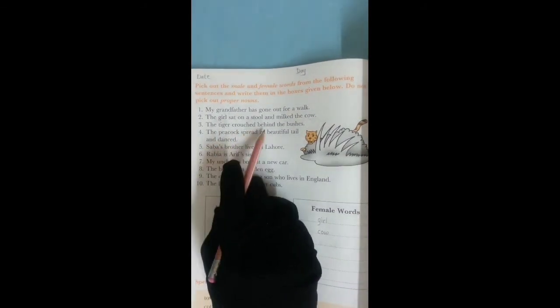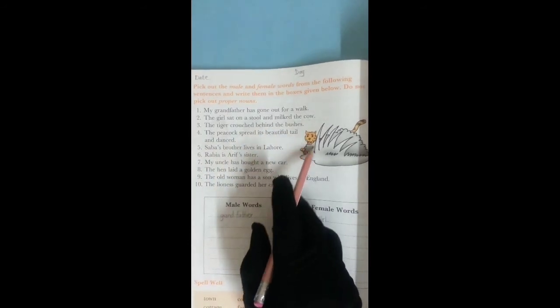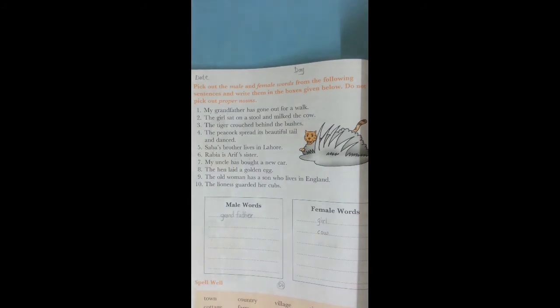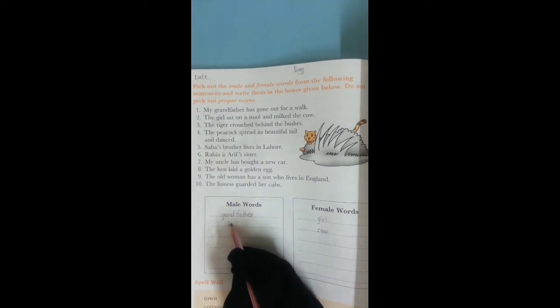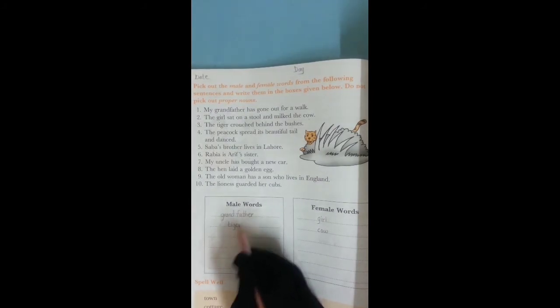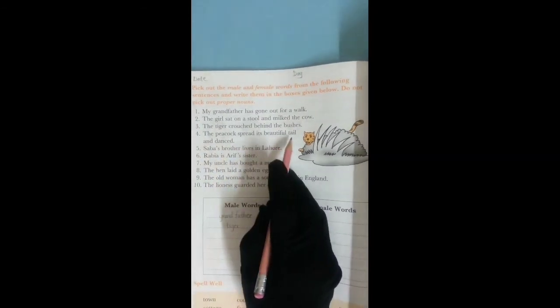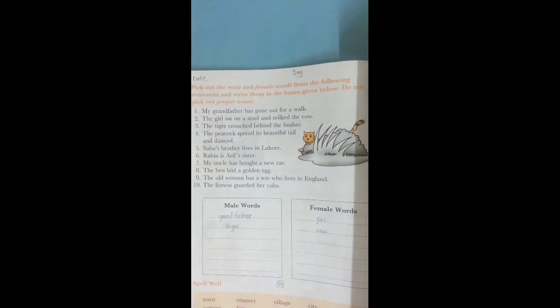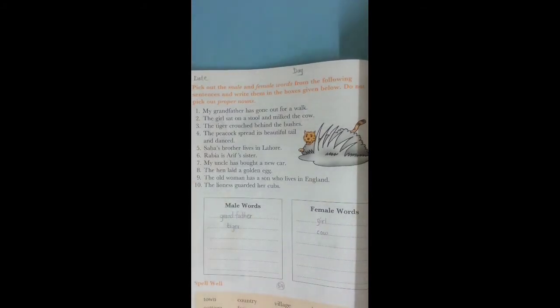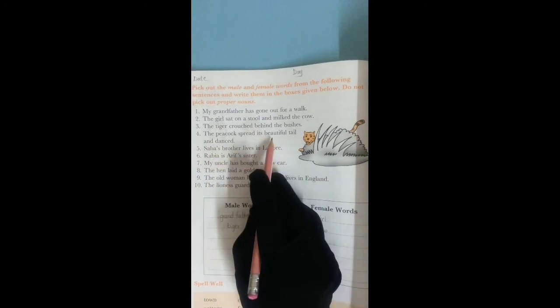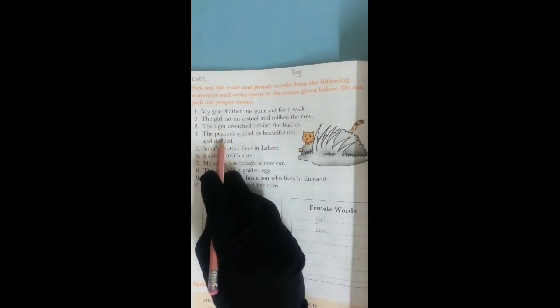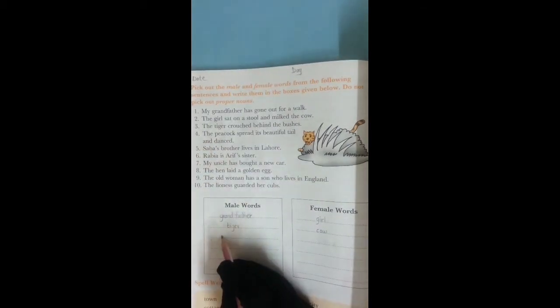Read the next sentence. The tiger crouched behind the bushes. Now find the word. Yes, tiger. We write in the male column. Read the next sentence. The peacock spread its beautiful tail and danced. Yes, find the word. The word is peacock, and peacock is a male word. We write in the male column.